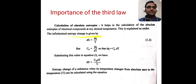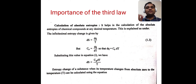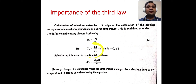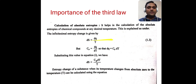The infinitesimal entropy change is given by dS = dq / T. You have to remember this equation. In a previous lecture, we studied that Cp = dq / dT, where Cp is the heat capacity at constant pressure. On rearranging, dq = Cp dT. Substituting into the first equation, we get dS = Cp dT / T.